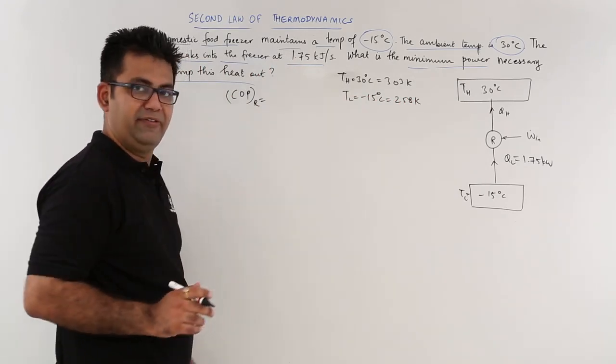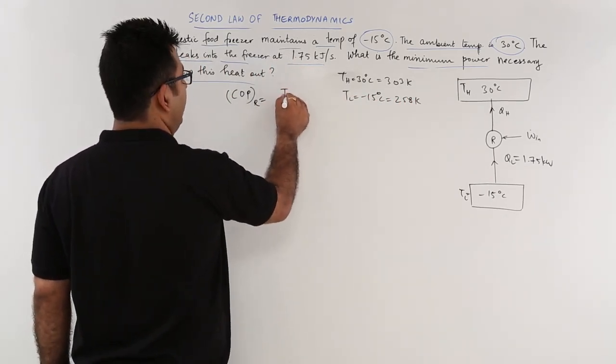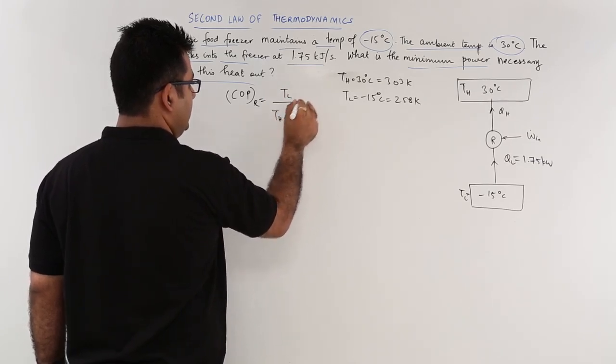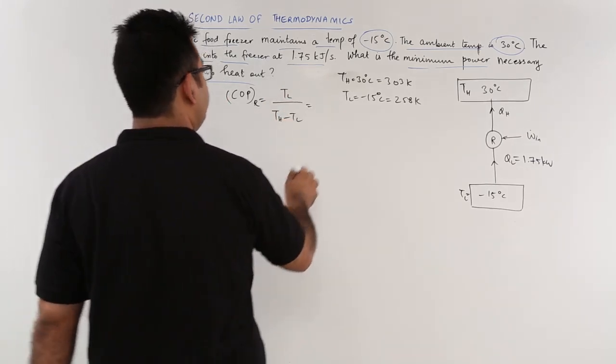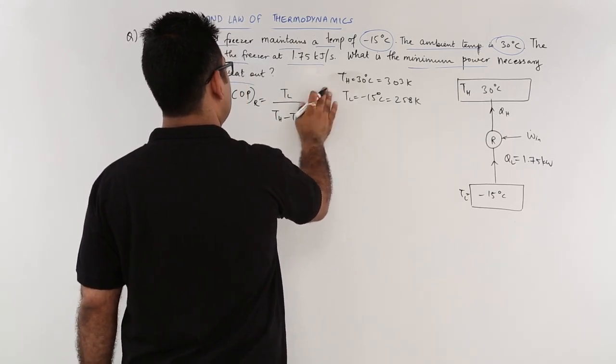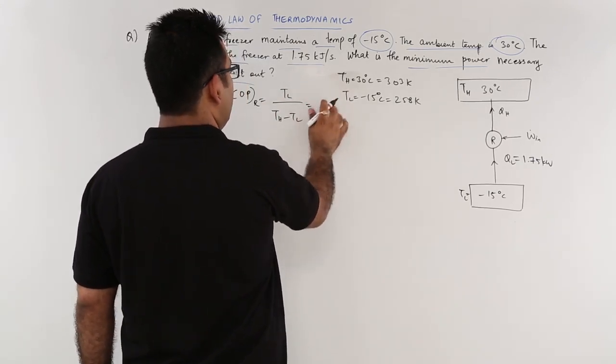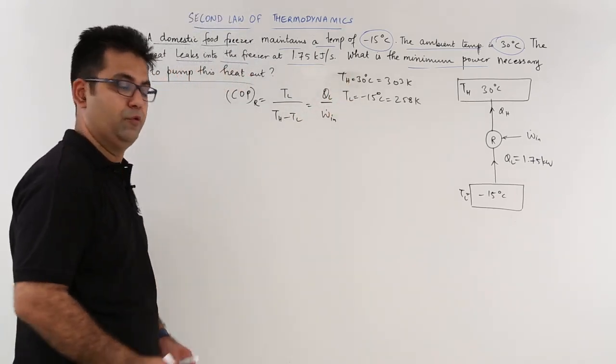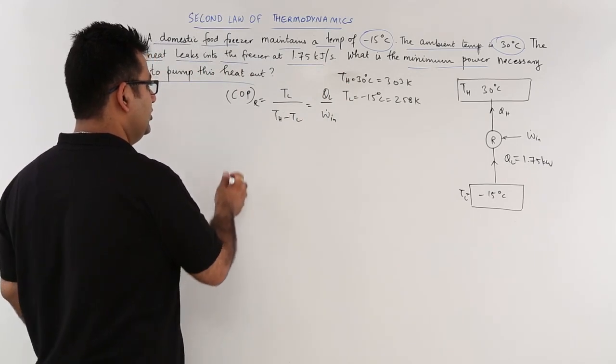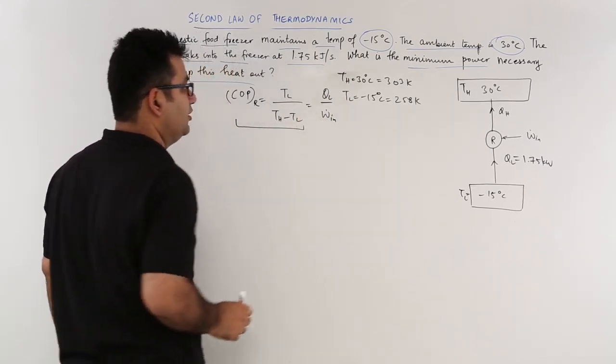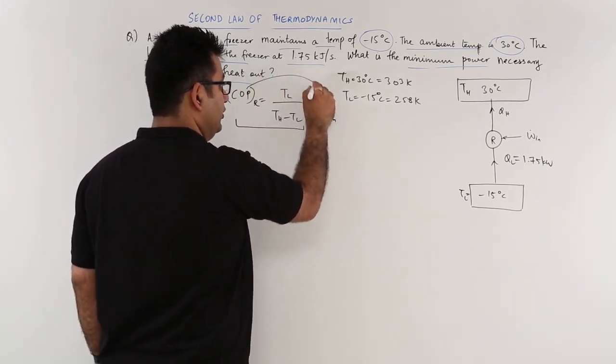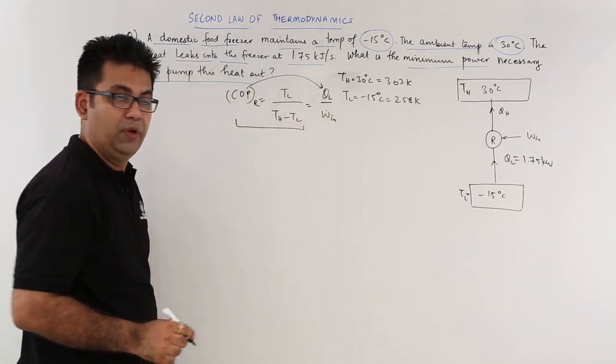So COP of a refrigerator, this is equal to TL upon TH minus TL, this is further equal to QL upon work input. So let us use this equation first and find out COP and then equate COP to this to find out W_in.